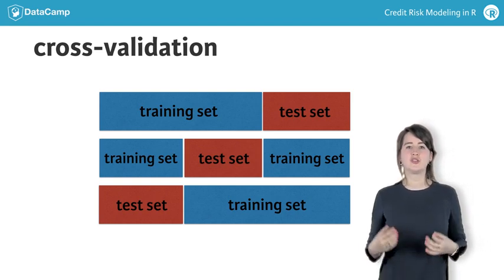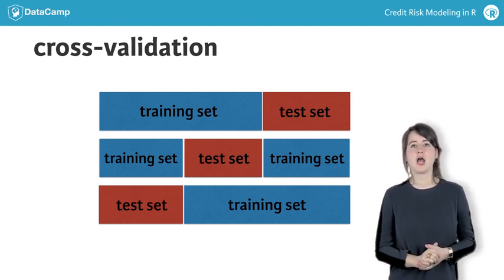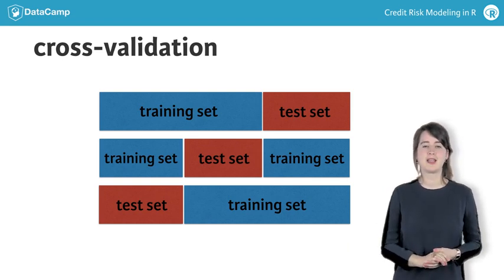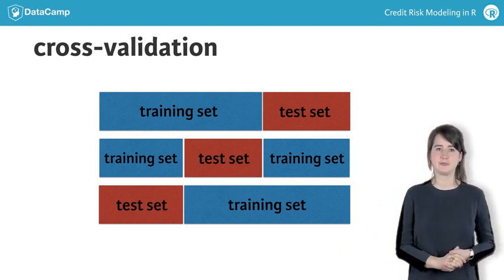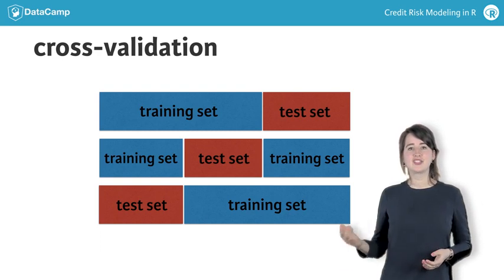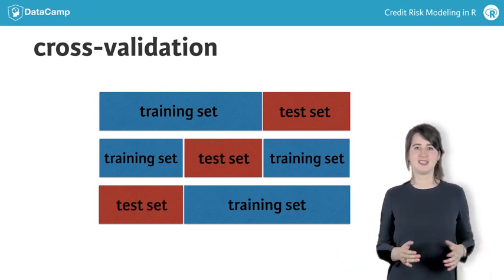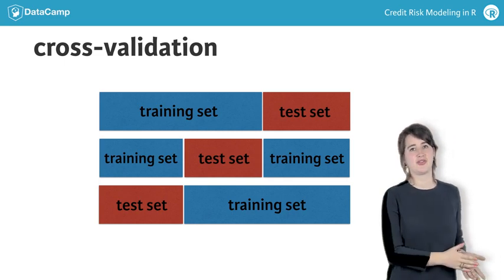Of course, we could use as many parts as we want, but we would have to run the model many times if using many parts. This may become computationally heavy. In this course, we will just use one training set and one test set containing two-thirds versus one-third of the data.